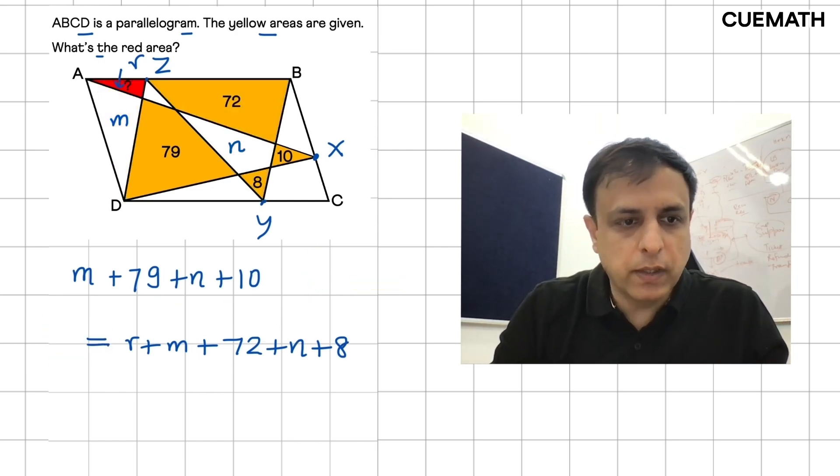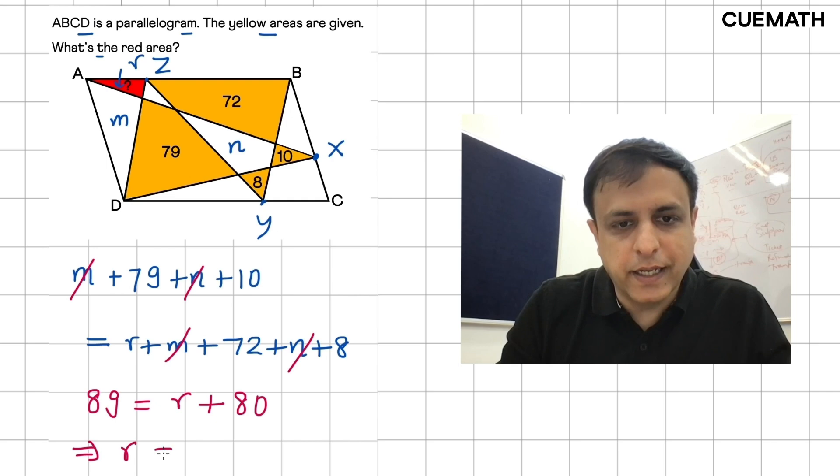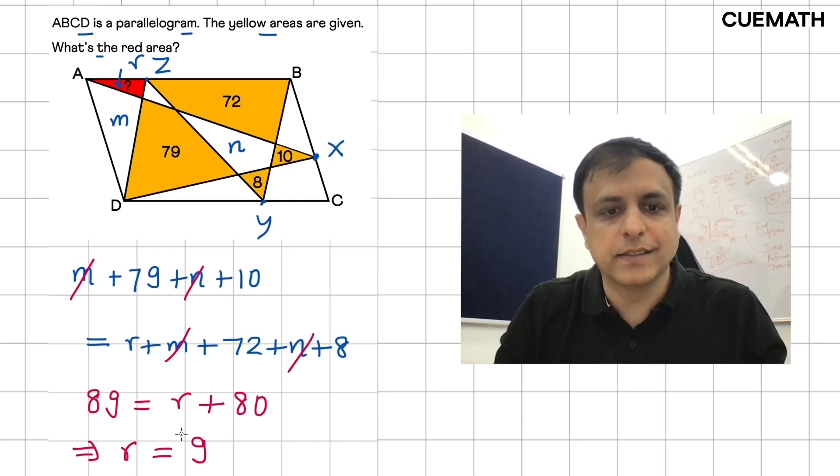So these two are equal and now simplifying, the M cancels out, the N cancels out. And we have on the left side 89 equal to on the right side, we have R plus 80. And from here we get the value of the red area as nine. So nine is our answer. Thank you.